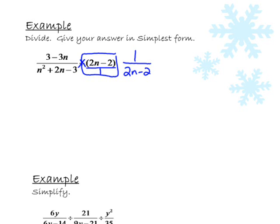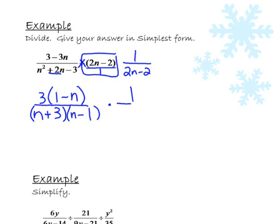Now that it's multiplication, we follow those rules. So you want to factor out your 3 on top and be left with 1 minus n. On the bottom, we're going to factor that. Our signs are different, so we have n plus and n minus. Since the 2n was positive, the 3 is going to be positive and the 1 is going to be negative. Times 1 over, we can factor a 2 out of this denominator, n minus 1.